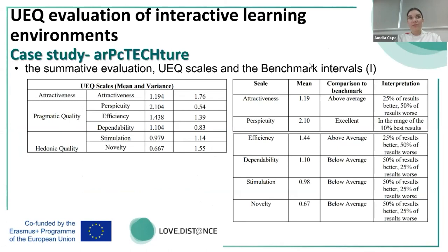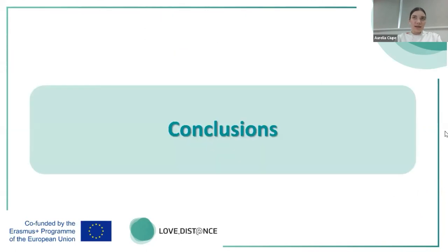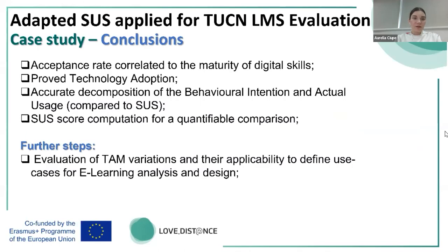The model divides all these components into pragmatic quality of assessment and hedonic quality. Pragmatic refers to how features are used in a specific scenario, while hedonic refers to user perception, user wishes, and subjective evaluation. The actual UEQ that was applied was to point out where we need improvements — identifying weaknesses and also recommendations that can be proposed to address those weaknesses. These are the two case studies we assessed in terms of conclusions.